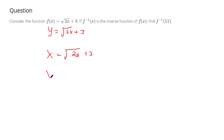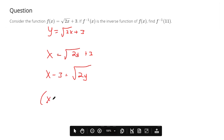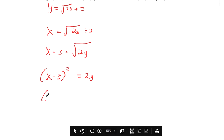So I'm going to subtract 3 from both sides. I'm going to square both sides. Just make sure you put x minus 3 in parentheses before you square it. And then we're going to divide both sides by 2.